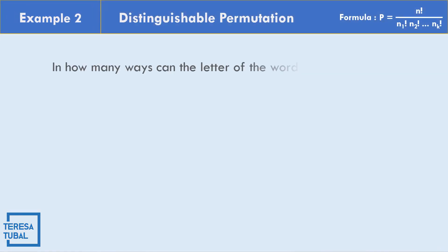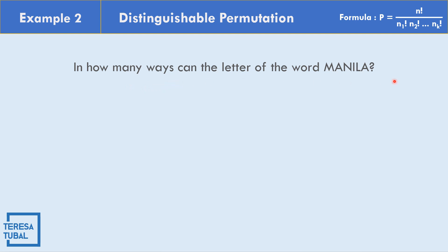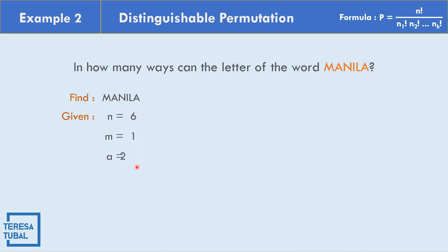In example number 2, in how many ways can the letters of the word MANILA be arranged? We count the letters: 1 through 6, so n equals 6. Checking for repetitions: M appears 1 time, A appears 2 times, N appears 1 time, I appears 1 time, and L appears 1 time.